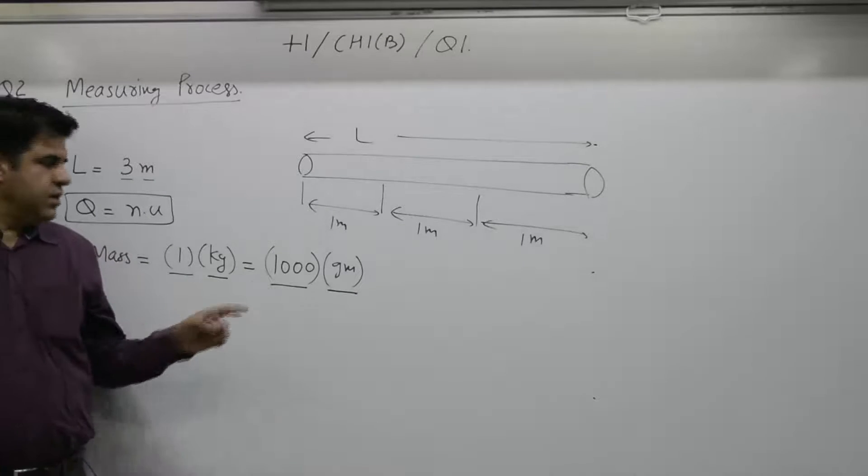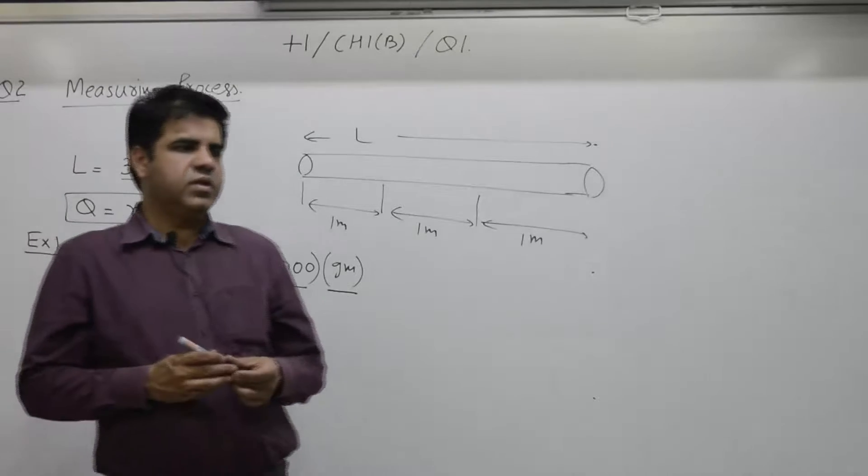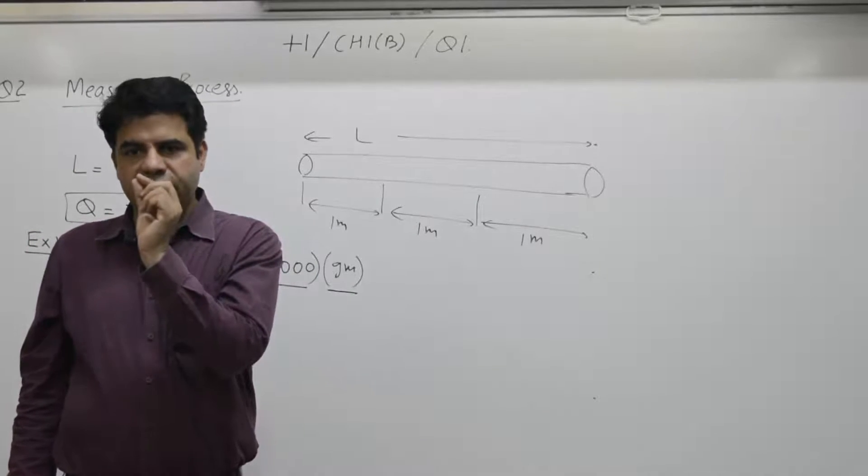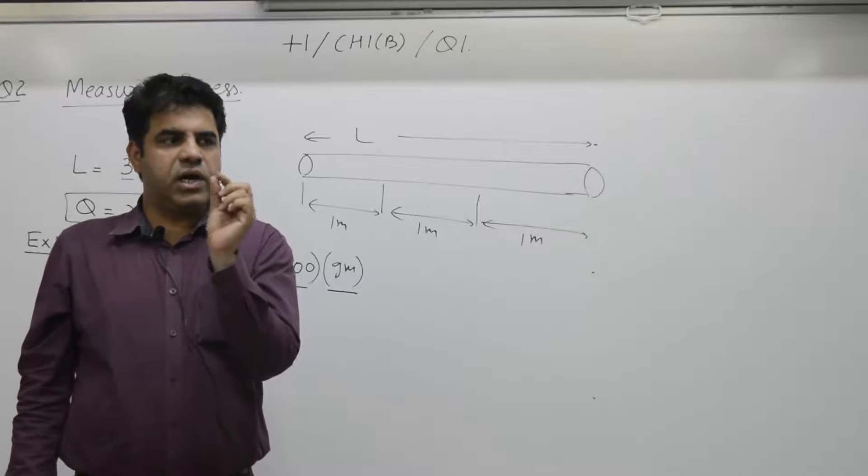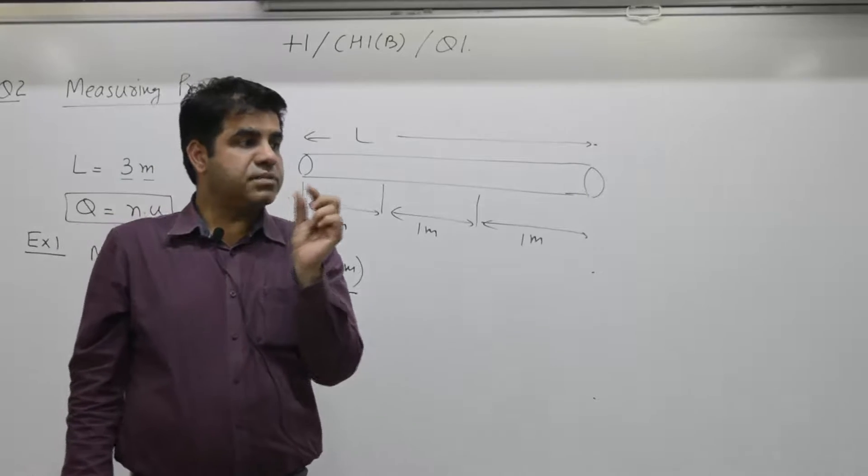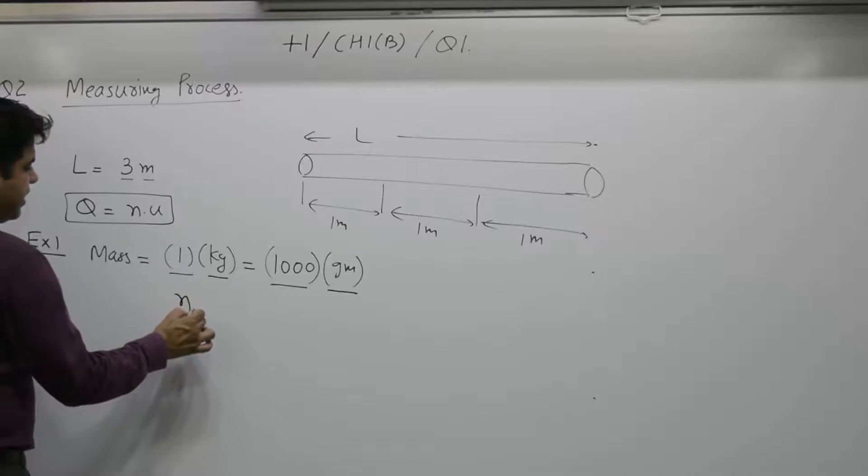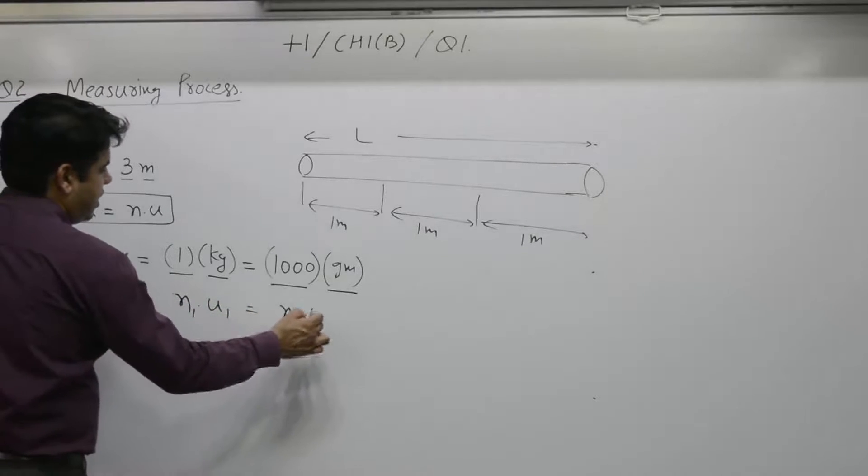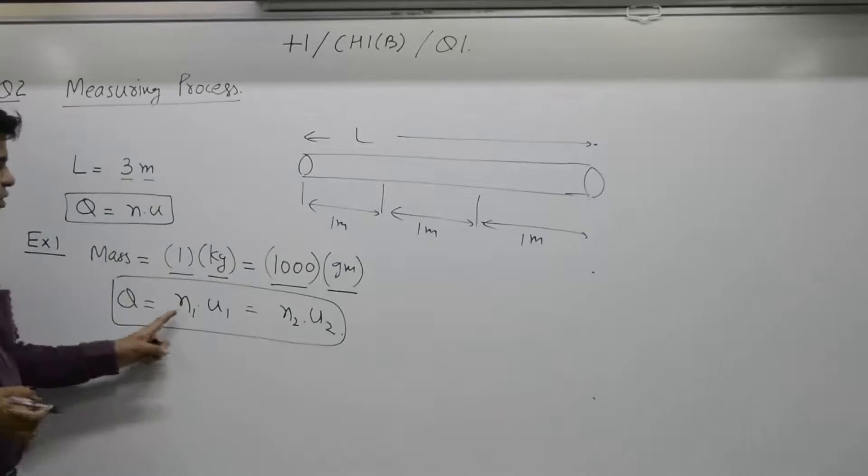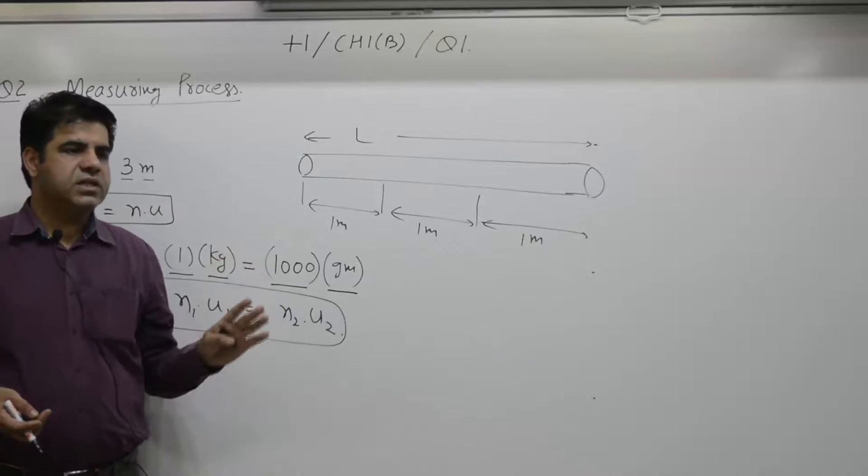If unit is small, numerical value will be large. 1 rupee is equal to how many paisa? 1 rupee, unit, is equal to 100 paisa. 100 is numerical value is large, paisa is a small unit. So we write this as N1 U1 is equal to N2 U2. Q is equal to N1 U1 equal to N2 U2.